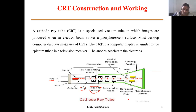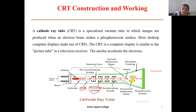For electric deflection, two pairs of parallel plates are used — one for horizontal and one for vertical deflection. For magnetic deflection, coils are used — one coil for horizontal and another for vertical. The vertical deflection is important because it moves the beam up and down the screen to print each pixel, making vertical and horizontal deflection systems very significant.